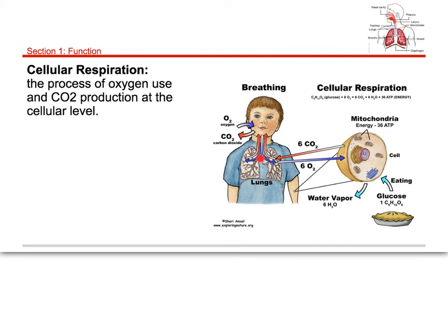At the cellular level, we take glucose — C6H12O6 — plus the oxygen we just breathed in, and derive energy. ATP stores energy, so our goal in each cell is to create energy through cellular respiration and use it for all of our processes. As a byproduct we make water and CO2. The water is kept in the body and given off as water vapor, and the CO2 is sent back to the lungs and breathed out.